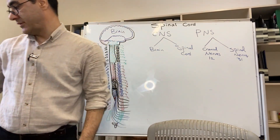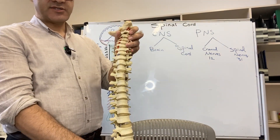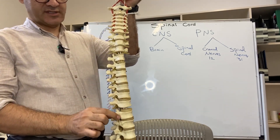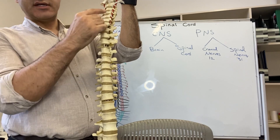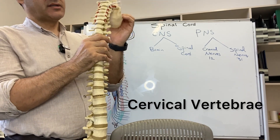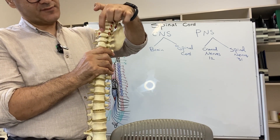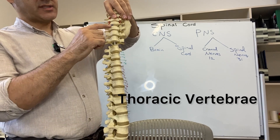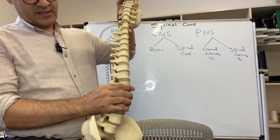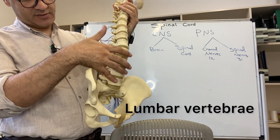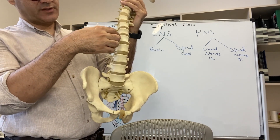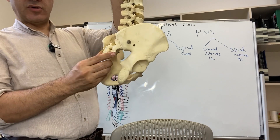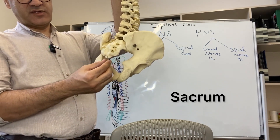This is the vertebral column. Here we have the occipital bone as part of the skull. Below it we have the vertebrae: seven cervical vertebrae — C1 through C7 — then 12 thoracic vertebrae, T1 to T12. Then we have five lumbar vertebrae, L1 to L5. Below that is the sacrum, which in adults is a single bone, and finally the single bone called the coccyx.